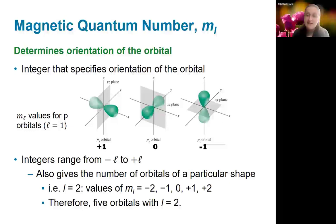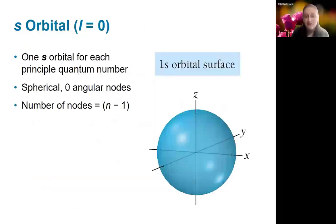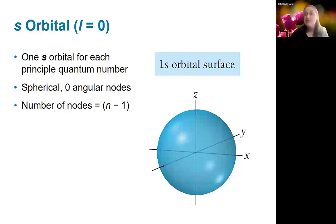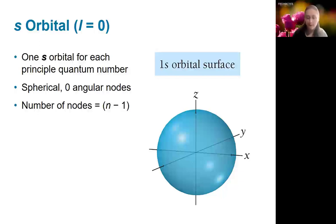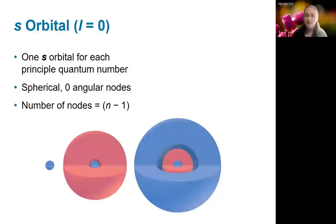Let's look at the orbital shapes in more detail. S orbitals are spherically symmetric, and there is one s orbital for every principal quantum number starting at n equals 1, giving us the 1s orbital — the lowest energy orbital in any atom. The 1s orbital has no nodes — no angular nodes and no radial nodes. For higher values of n, s orbitals gain radial nodes, so the total number of nodes equals n minus 1.